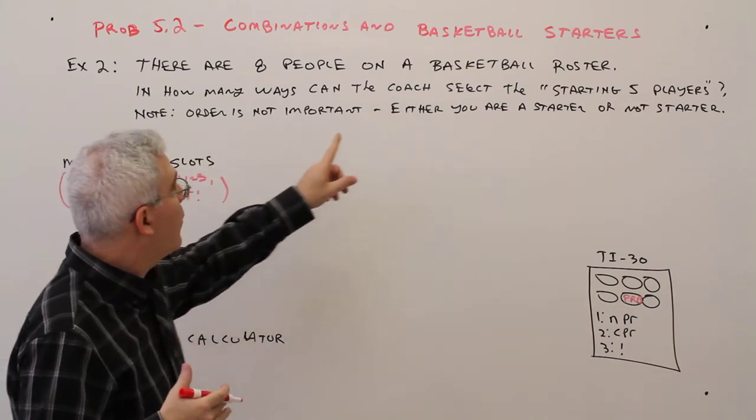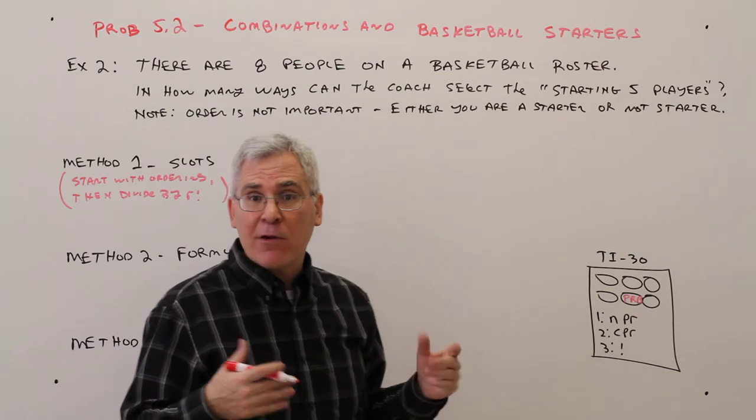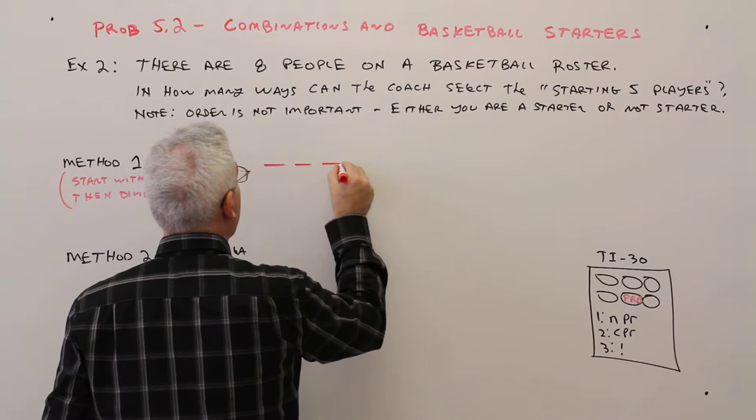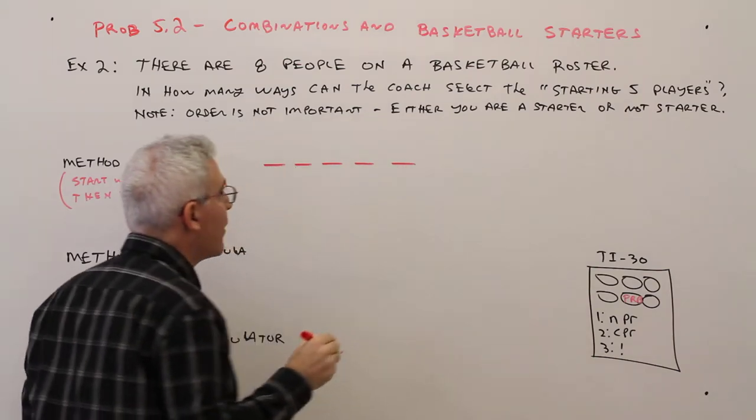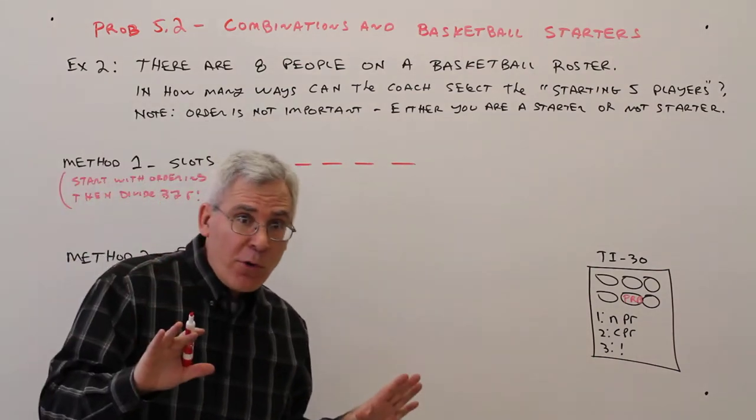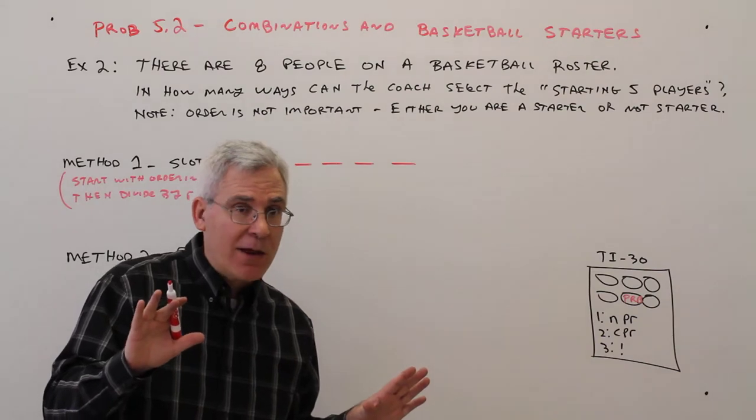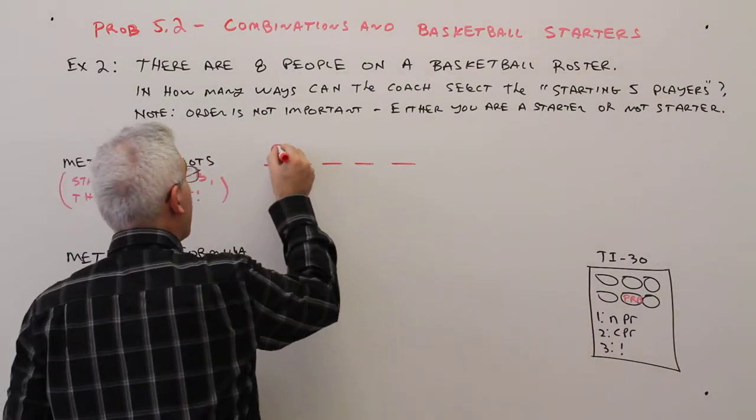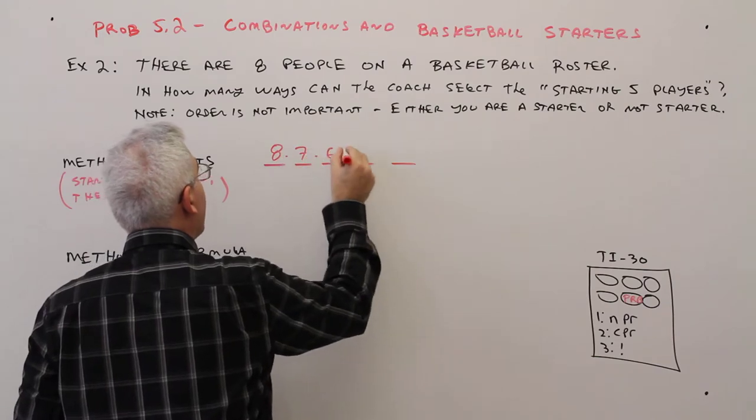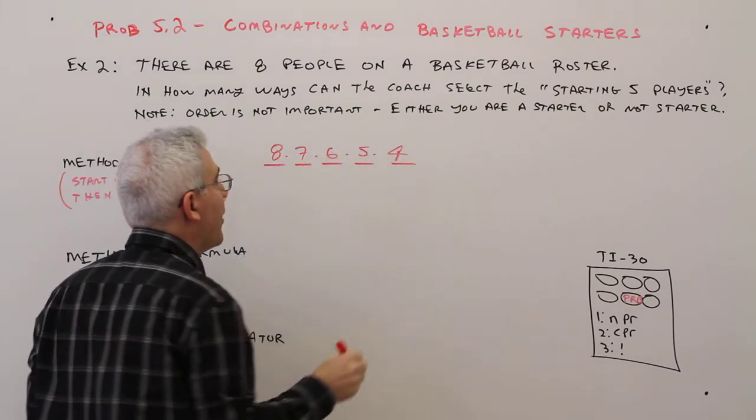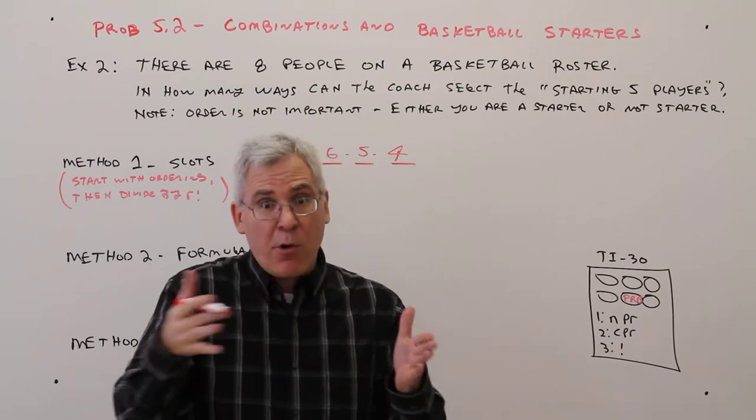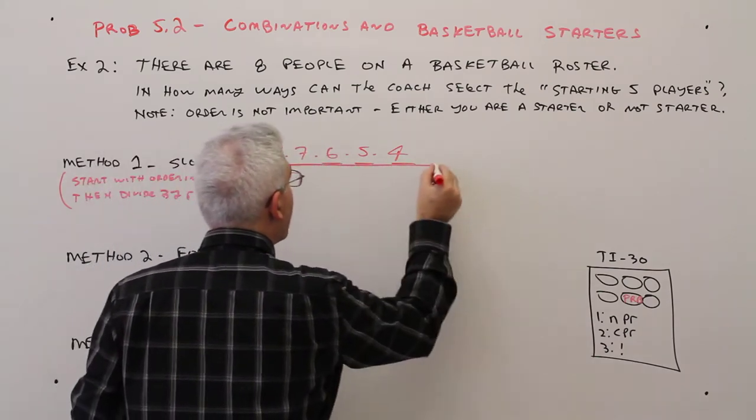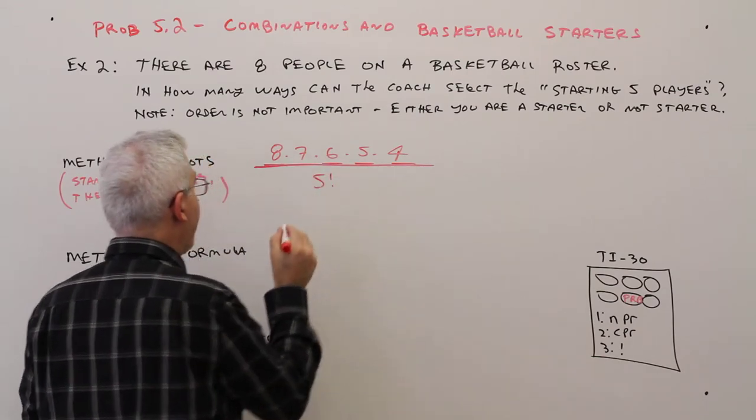Okay, so I'm picking 5 players, so I'll have 5 slots, 1, 2, 3, 4, 5. And if I were to do ordering, which I'm not, but if I were to do ordering, I could put 8 players, and then 7, and then 6, and then 5, and then 4. So that would be an ordering in a row of 5.